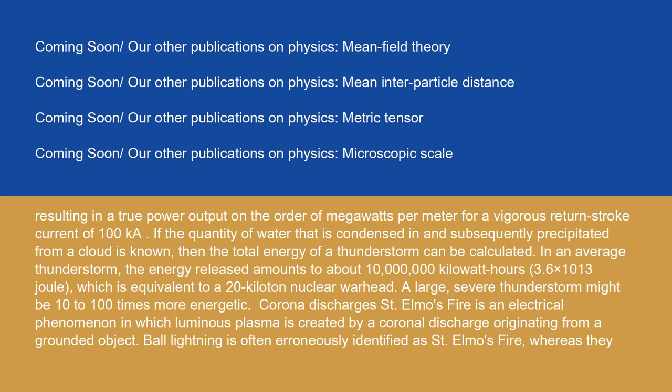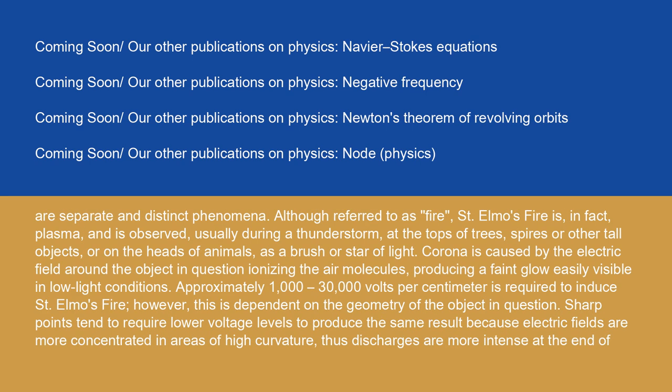Corona discharges: St. Elmo's fire is an electrical phenomenon in which luminous plasma is created by a coronal discharge originating from a grounded object. Ball lightning is often erroneously identified as St. Elmo's fire, whereas they are separate and distinct phenomena. Although referred to as fire, St. Elmo's fire is in fact plasma, and is observed usually during a thunderstorm at the tops of trees, spires, or other tall objects, or on the heads of animals, as a brush or star of light. Corona is caused by the electric field around the object in question ionizing the air molecules, producing a faint glow easily visible in low-light conditions. Approximately 1,000 to 30,000 volts per centimeter is required to induce St. Elmo's fire.